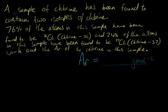So a sample of chlorine has been found to contain two isotopes of chlorine. Looking here we can see the two isotopes are chlorine 35, chlorine 37, two isotopes of chlorine. 76% of the atoms in this sample have been found to be Cl-35. This is one isotope and this is the mass number here. This thing here is the mass number. That's the number of nucleons in that particular isotope, so protons plus neutrons. 76% of the atoms in this sample have been found to be Cl-35 or chlorine 35.